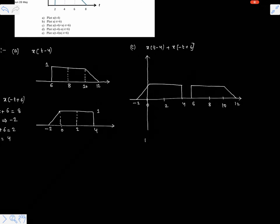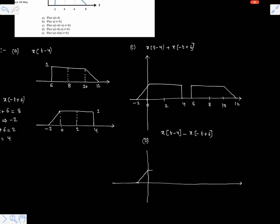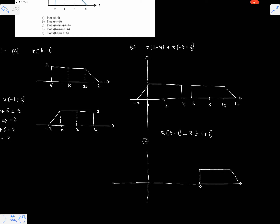Part d is asking to plot x of t minus 4 minus x of minus t plus 6. This is also straightforward because there is no time overlap between these two signals — there is nothing to add and nothing to subtract. Simply place the signals according to their amplitude sign. Here is x of t minus 4, with time values 6, 8, 10, 12.